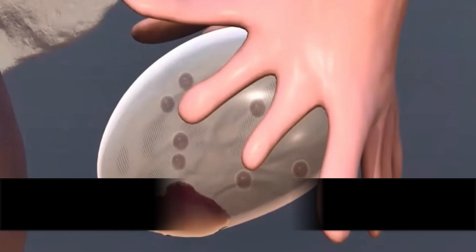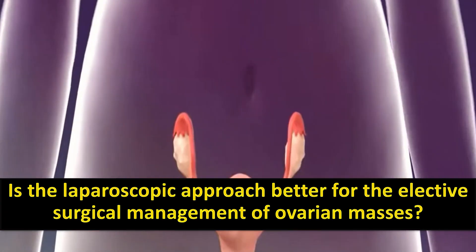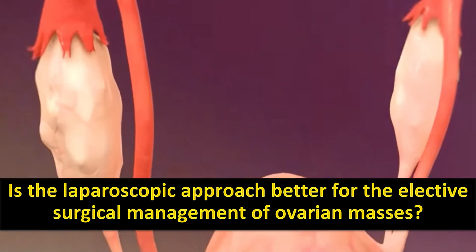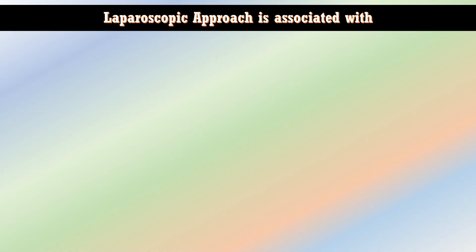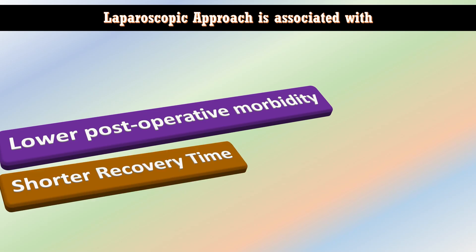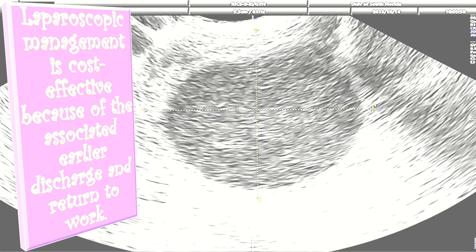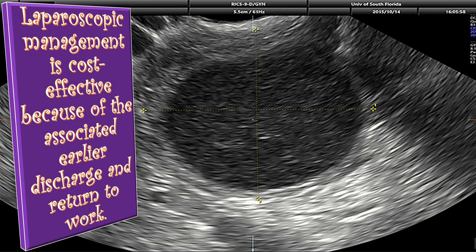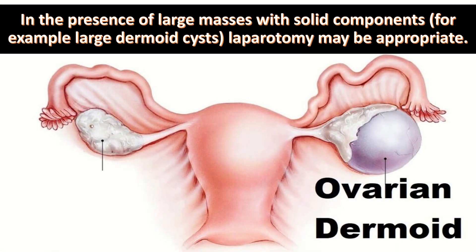The laparoscopic approach for elective surgical management of ovarian masses presumed to be benign is associated with lower postoperative morbidity and shorter recovery time, and is preferred to laparotomy in suitable patients. Laparoscopic management is cost-effective due to earlier discharge and return to work. In the presence of large masses with solid components — for example, large dermoid cysts — laparotomy may be appropriate.